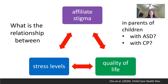We conducted research — two different studies — looking into the relationship between affiliate stigma, stress levels, and quality of life in parents of children with autism spectrum disorder and with children with cerebral palsy. Affiliated stigma often refers to the internalized stigma among family members of stigmatized individuals.